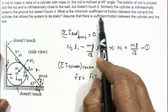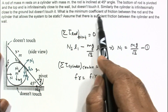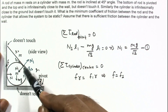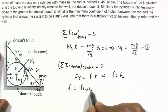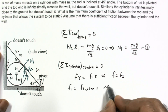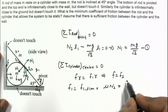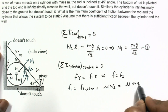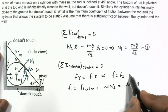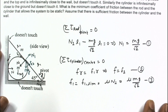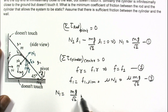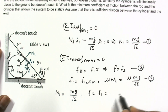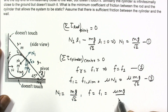We have to calculate the minimum coefficient of friction between the rod and the cylinder. For the minimum condition, we take the critical case when F1 equals its limiting value: F1_limiting = μ × N1. We have already calculated N1 = Mg/√2. So F and F1 are both equal to μ × Mg/√2. These are the conclusions from equations 1, 2, and 3.